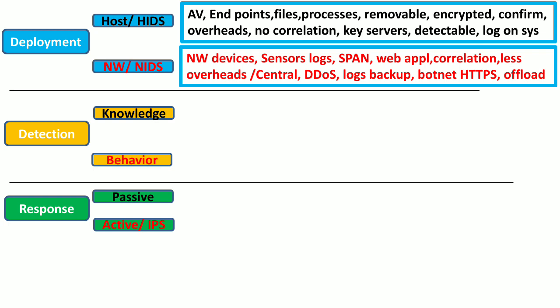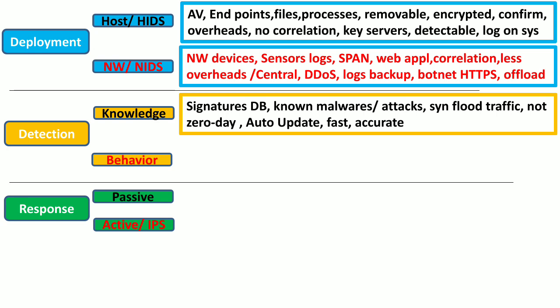With regards to detection technology, the knowledge-based Intrusion Detection System uses a database of signatures for known malware or known attacks, for example signatures for SYN flood attacks. However, it does not detect zero-day attacks because it does not have signatures for new malware. There should be an automatic update feature available on knowledge-based IDS so it can update its signatures database. Knowledge-based IDS are faster than behavior-based IDS and they are more accurate.